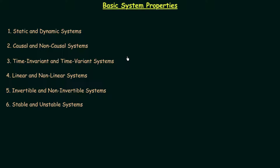Let me tell you one thing — the definition of these 12 systems is not very complicated; anyone can understand how they are defined. But when a question is given, you will find some difficulty in determining the exact nature of the system. For this we will solve different examples covering each and every possible case. That's why we will complete the definitions quickly and dive directly into solving the questions.